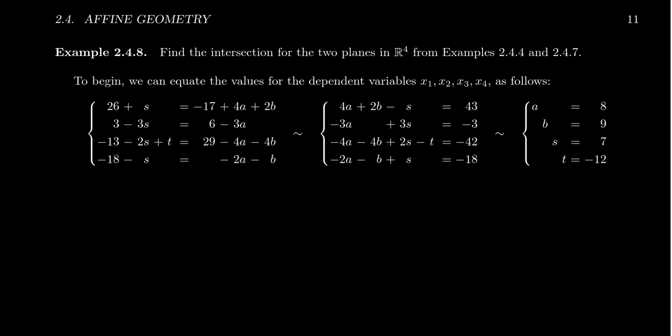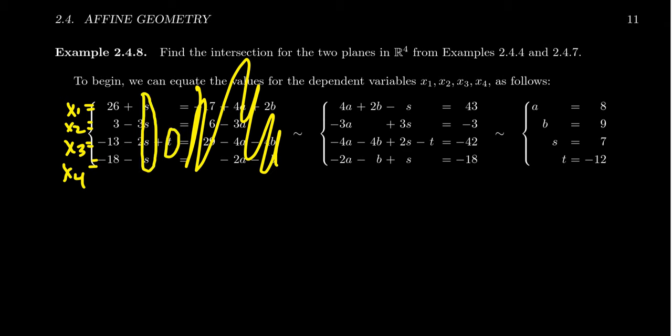So let me show you an example of this. In this lecture, we have now seen two planes that we constructed in R4, and we saw these in previous videos. One of the planes looked like the following. The first plane said that X1 equals 26 plus S. X2 looks like 3 minus 3S. X3 is equal to 13 minus 2S plus T. And then X4 was equal to negative 18 minus S. So those are the four parametric equations that we got for the first plane. This is, in fact, a plane because there are two free variables, two parameters in this description. S and T are free parameters. That was the first plane.